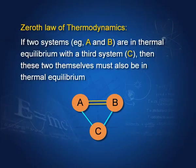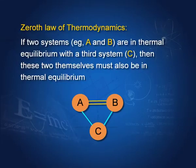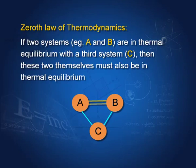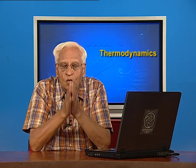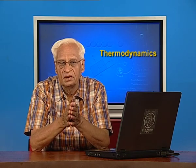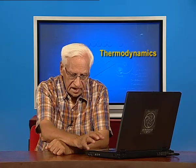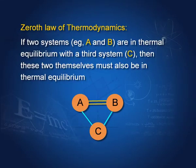We start with the zeroth law of thermodynamics, which we have already discussed in the last few lectures. Briefly, it means that if A and C are in thermal equilibrium, and B and C are in thermal equilibrium, then A and B must also be in thermal equilibrium. Remember, only when a substance is in thermal equilibrium can we assign a temperature to that substance or assembly of particles.